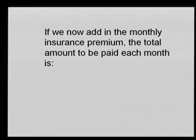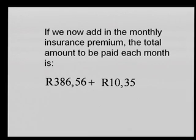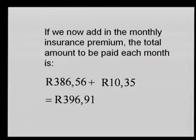He also pays an insurance premium each month. The lenders know people can't pay R9,800 upfront, so they offer hire purchase over three years — and that's how they make money. Adding the monthly insurance premium of R10.35 to R386.56 gives a total monthly payment of R396.91.